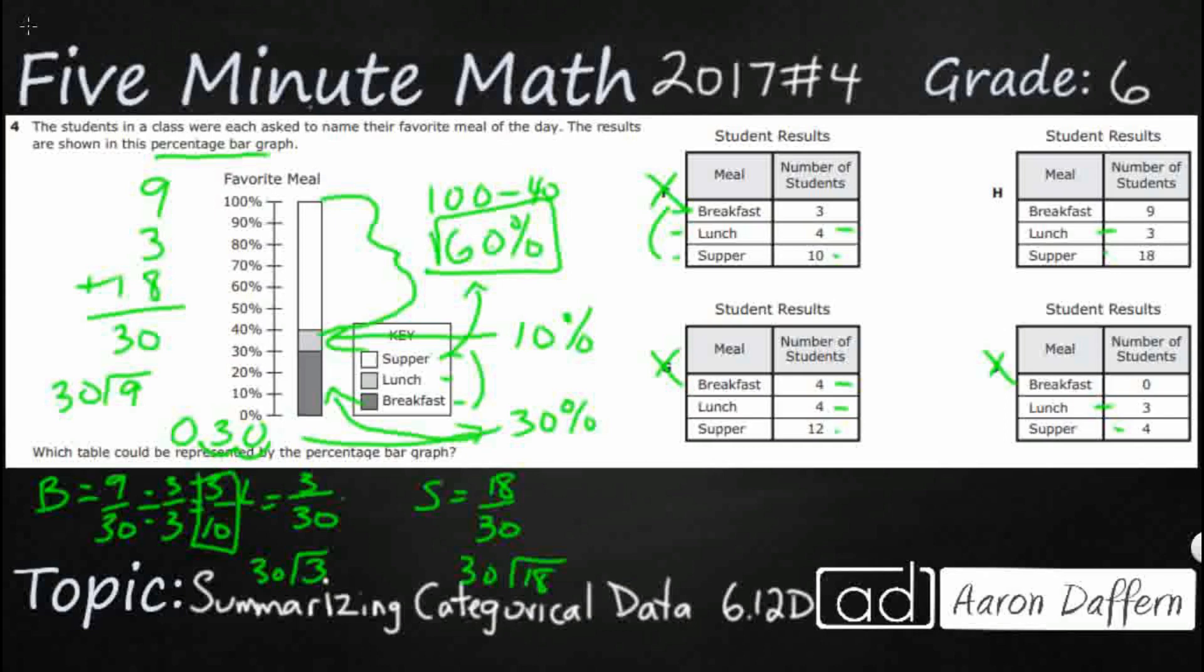So let's divide this by 3 over 3 and you're going to get 1 tenth. So that's 0.1. Move the decimal over twice and you get 10 percent, which is what you need right here.